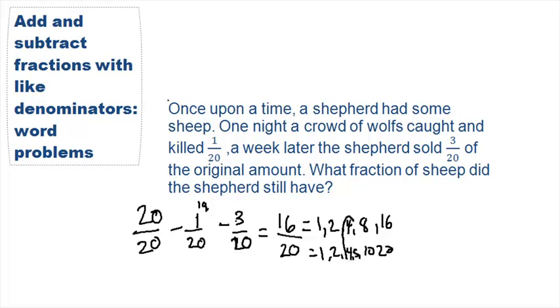The greatest common factor is 4. We will divide both the top and the bottom by 4 to reduce our fraction. 16 divided by 4 is equal to 4, and 20 divided by 4 is equal to 5. So the shepherd still had 4/5 of his sheep.